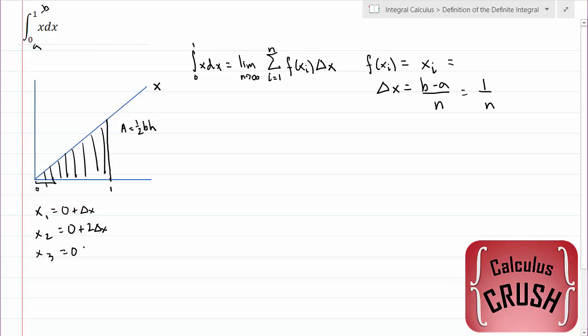x3 is 0 plus 3 delta x. Get the point? So xi is just 0 plus i delta x, which is just i delta x. So xi is equal to i times delta x, which equals i over n.